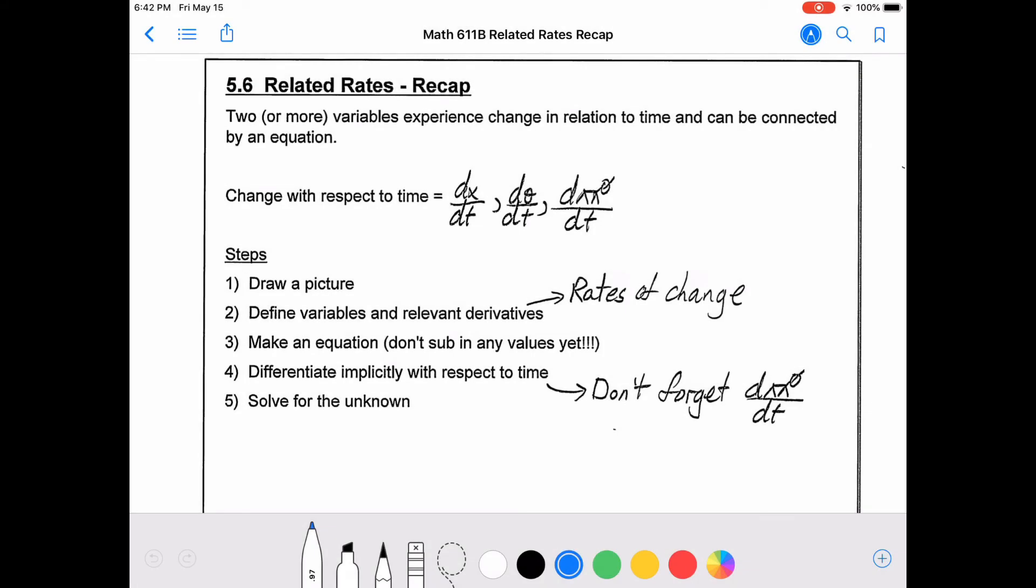Hi folks, welcome to the related rates recap. We're going to take a quick jaunt through the method and one example. So related rates are when two or more variables experience change, typically in relation to time, and they can be connected by an equation.